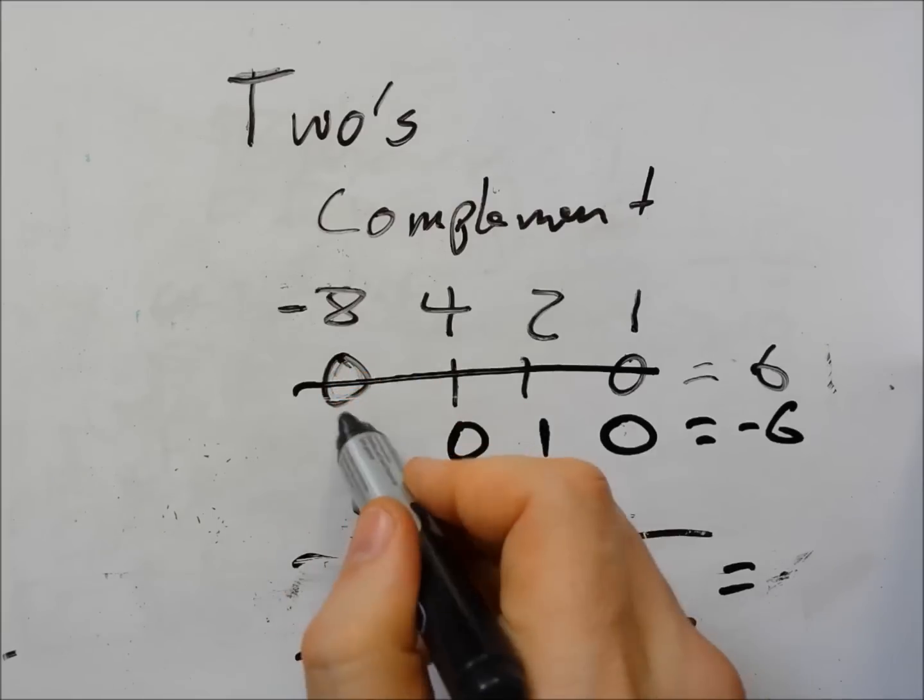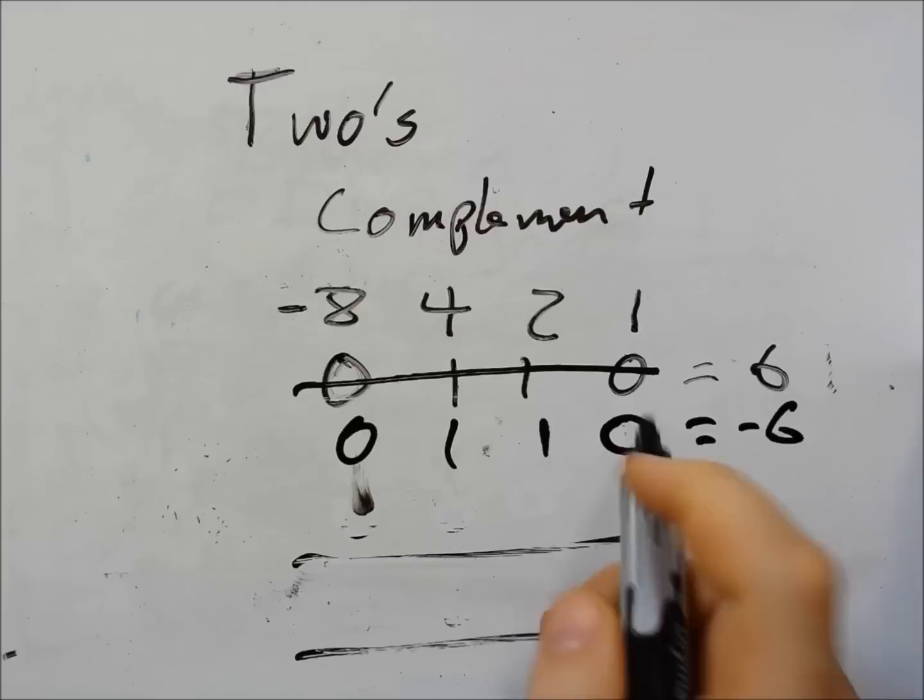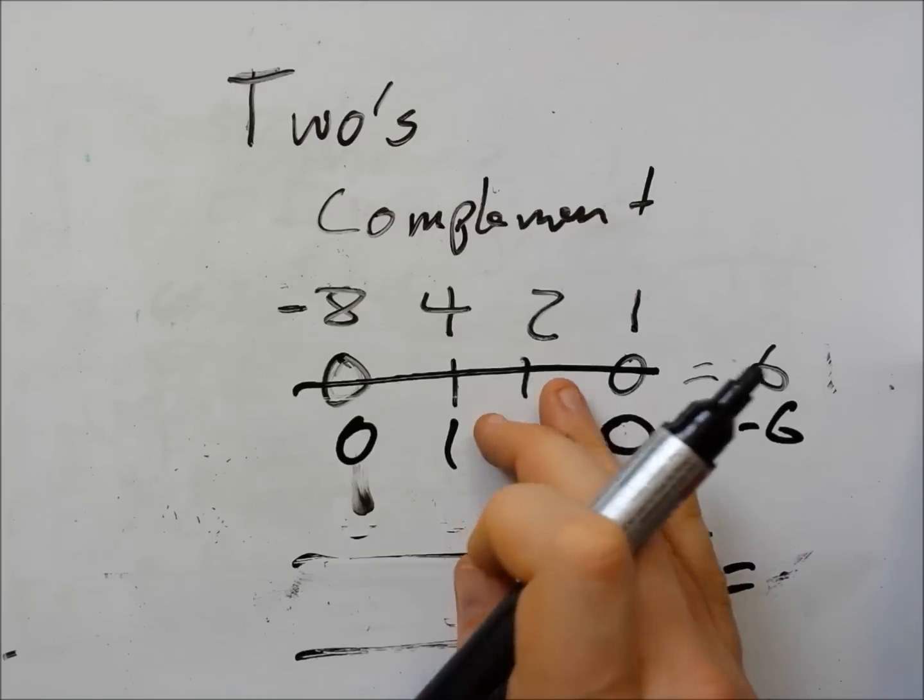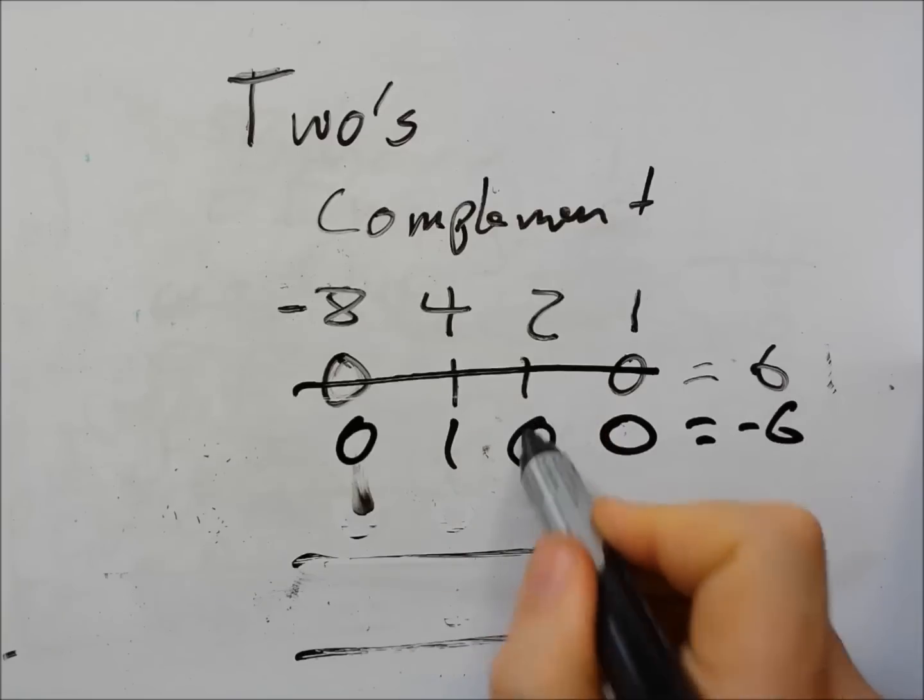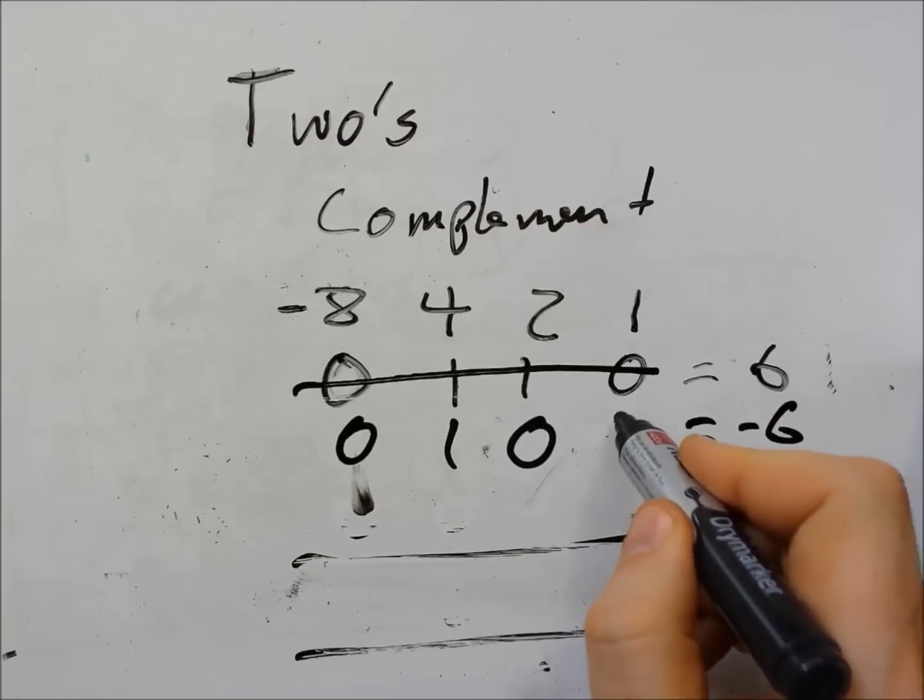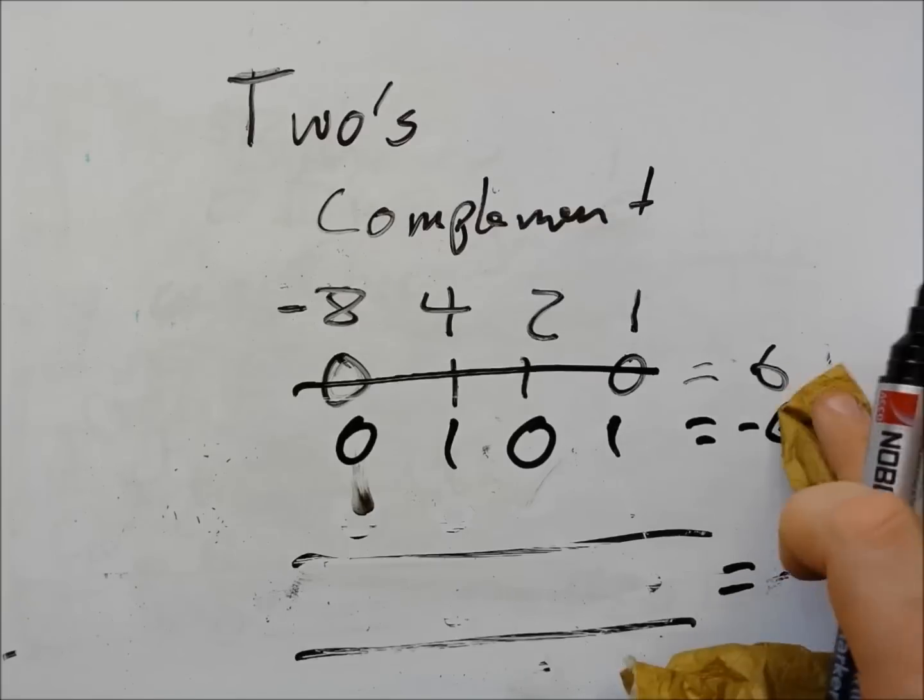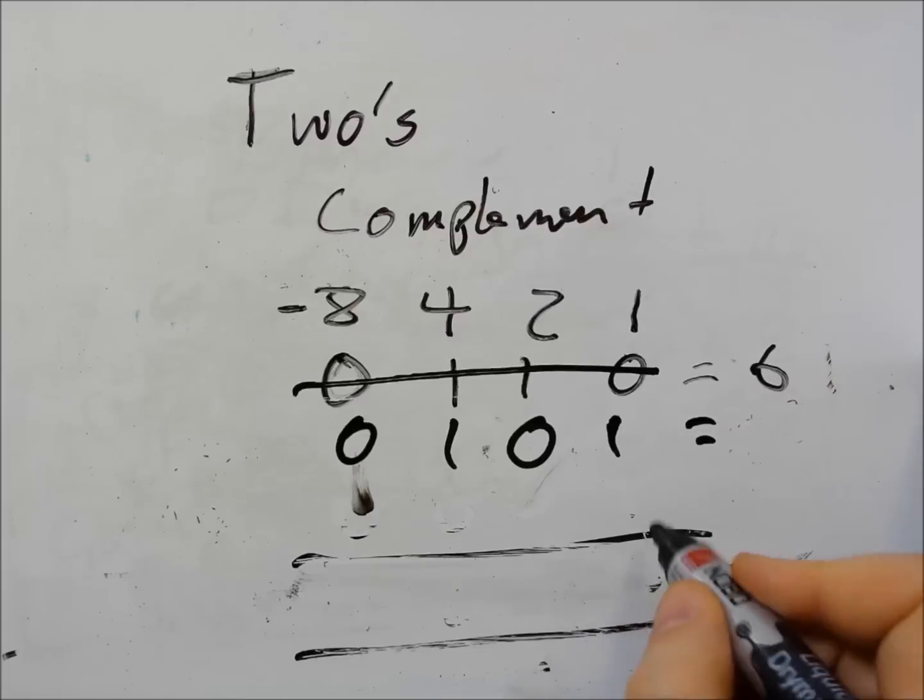So instead of one I'm going to have a zero. Instead of zero I'm going to have a one. One is going to go to zero and zero is going to go to one. There we are. I flip the digits. It's not equal to minus six anymore and then I add one.